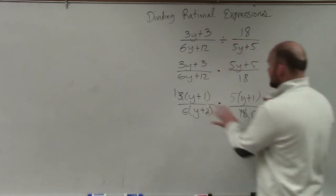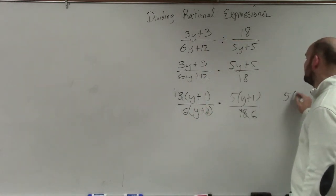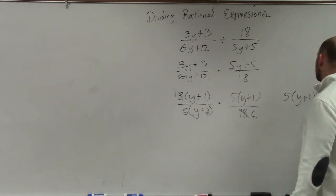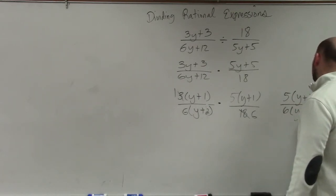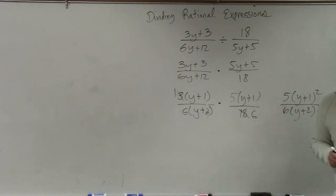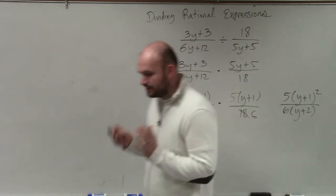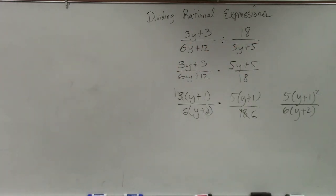So my answer here in this case is going to be 5 times y plus 1 squared over 6 times y plus 2. And that's just going to be it. Now, obviously, you could multiply y plus 1 squared if you wanted to.